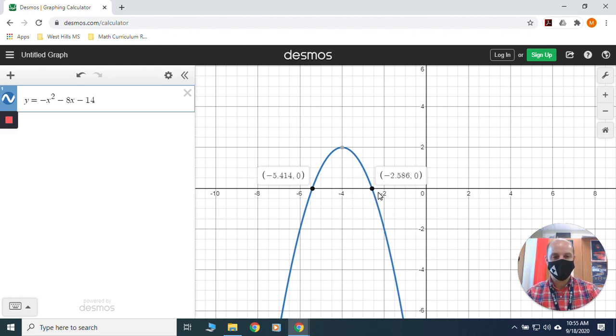Those are going to be my answers to the equation if my equation equaled 0, right? Because y is 0 at those two points. So you can use graphing to solve a quadratic equation. You graph it and you find out where the x-intercepts are and that solves the equation.